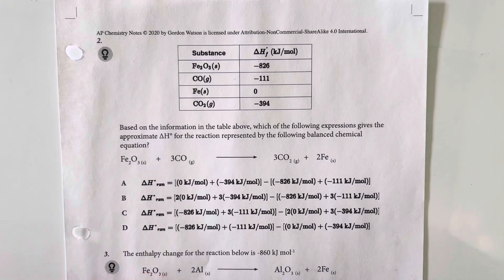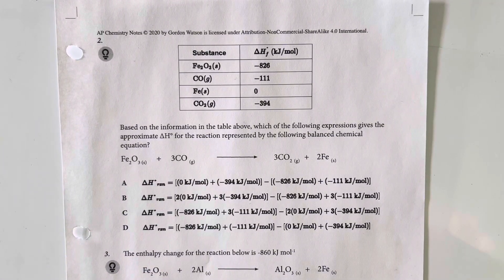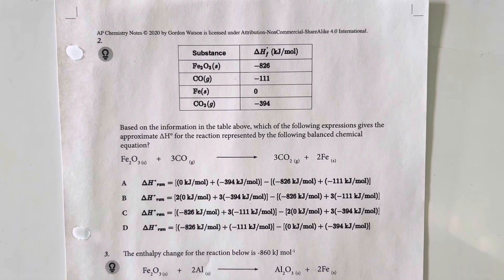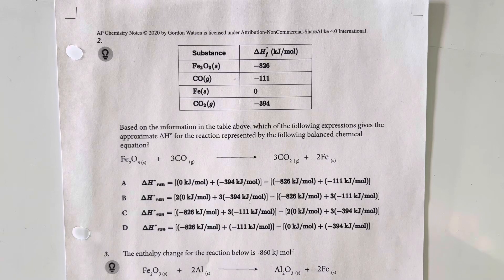6.8 practice problems. Based on the information in the table above, which of the following expressions gives the approximate delta H for the reaction represented by the following balanced chemical equation?